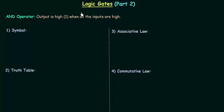In the last lecture we completed NOT gate. In this lecture we will complete AND gate. There are six points that we have to discuss: symbol, truth table, associative law, commutative law, enable and disable, and the last one is unused input. I will explain all six points one by one and we will start with the AND operator.